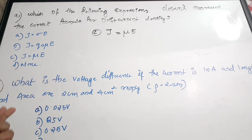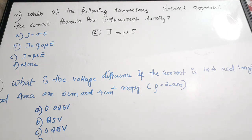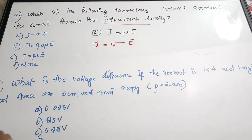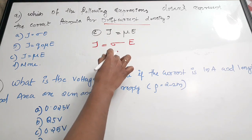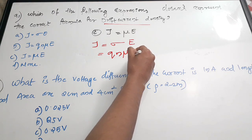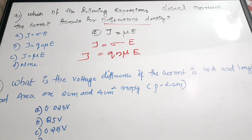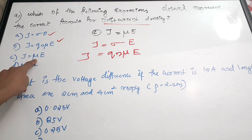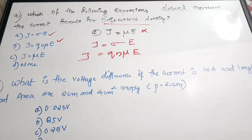The first question: which of the following expressions doesn't represent the correct formula for drift current density? The drift current density equation is J = σE, where σ is the conductivity and E is the electric field. Conductivity can be represented as charge × number of carriers × mobility × electric field. So J = μE is the wrong representation — the correct answer for the first question is option C.